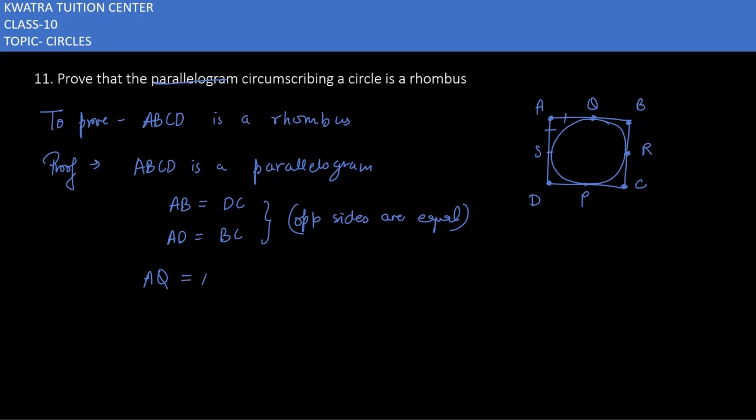So yes, you can mention that they are the tangents from point A. Point of contact - AQ and AS are equal. Then on the other side you can see that QB is equal to BR. So I can mention that QB is equal to BR. This is tangent from point B.